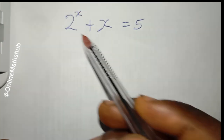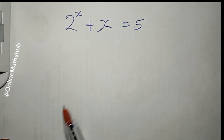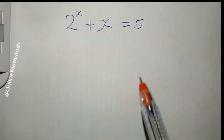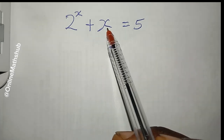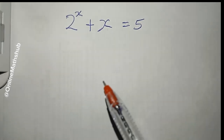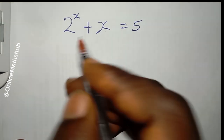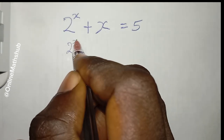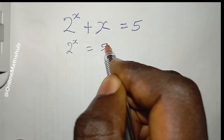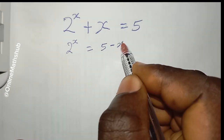What I have here is 2^x + x = 5. The first step I want to take is to move this x to the right-hand side, giving us 2^x = 5 − x.